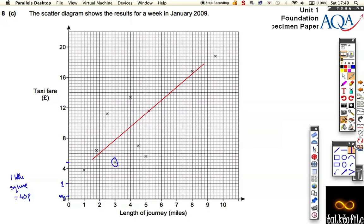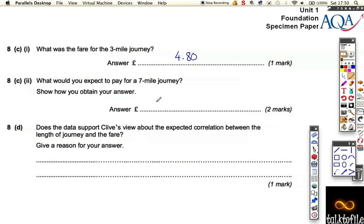So if we draw a vertical line at 7 until we hit our line of best fit, it's exactly there. Let's draw a horizontal line straight across, see where it comes up. It comes up there. Now what's that? This line in between is 14 pounds, and remember, every little square is worth 40p, so it's 14 pounds 40, 14 pounds 80. So we'd expect a 7 mile journey to be 14 pounds and 80 pence.